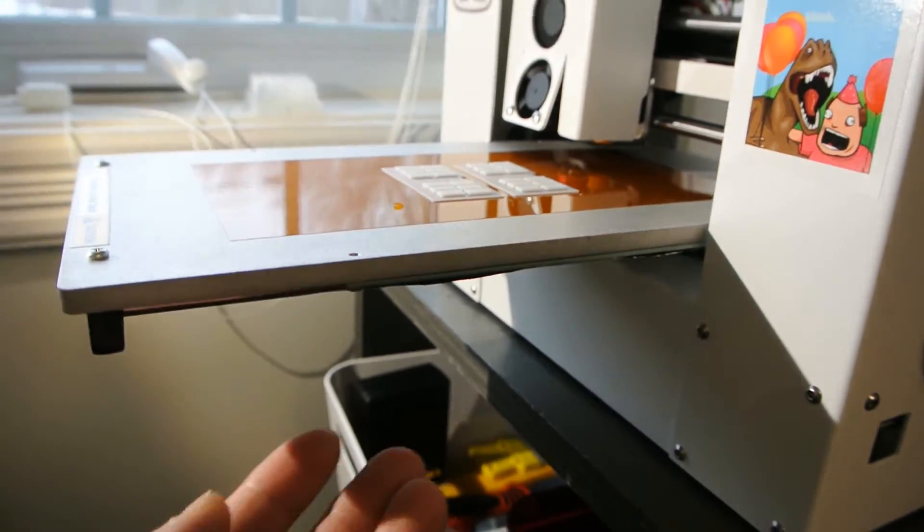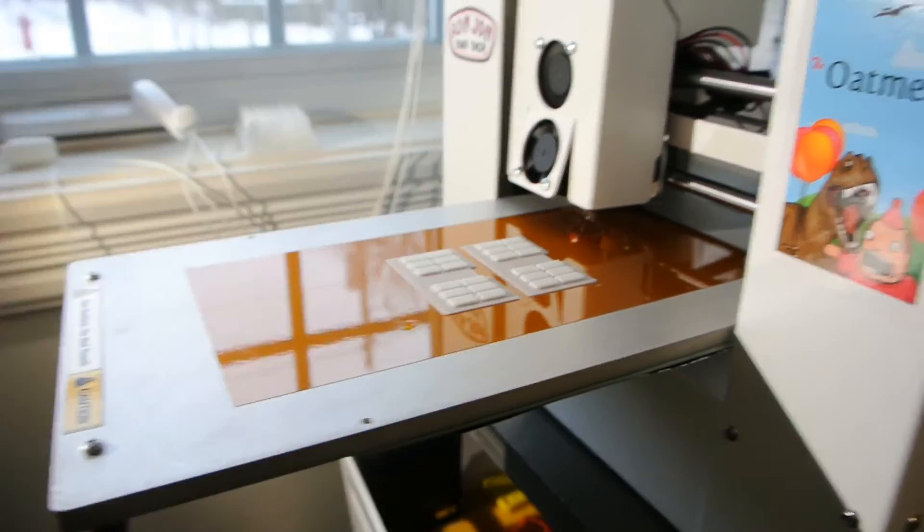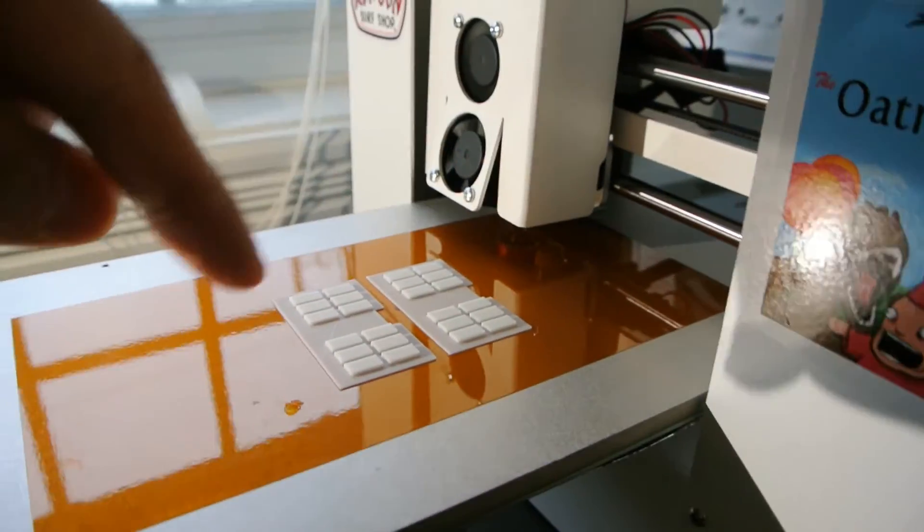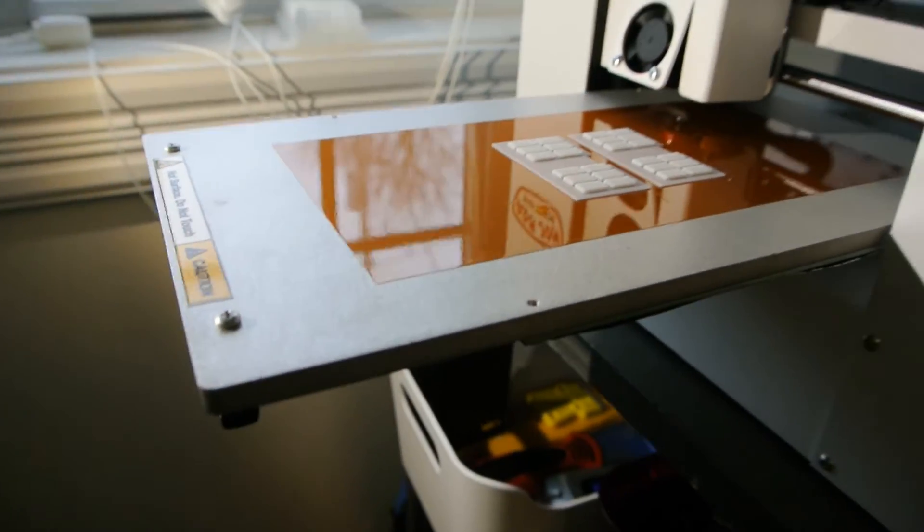So basically, all I had to do was take off the old bed, unscrew this, take off the arms. There's a belt in here. Took that out. Just put it back together the way you take it apart. It's really easy.